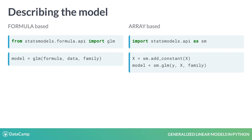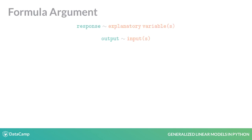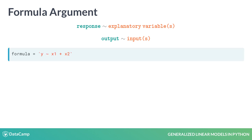The main arguments are formula, data, and family. The formula is at the heart of the modeling function, where the response or output is modeled as a function of the explanatory variables or the inputs. Each explanatory variable is specified and separated with a plus sign. Note that the formula needs to be enclosed in quotation marks.